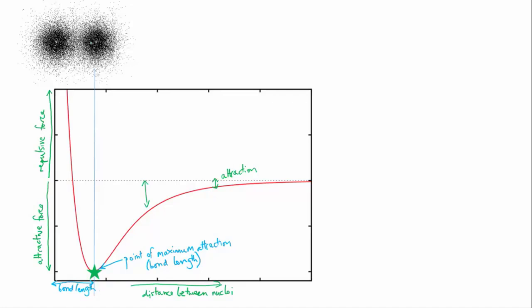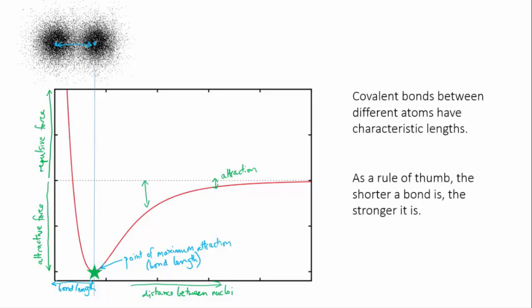This preferred distance, the length of the bond, is different for different atoms. A rule of thumb says that the shorter a bond is, the stronger it is. This makes sense. If the electrostatic attraction is able to pull the atoms closer together, then it must be able to cancel out a greater level of repulsion from the nuclei.